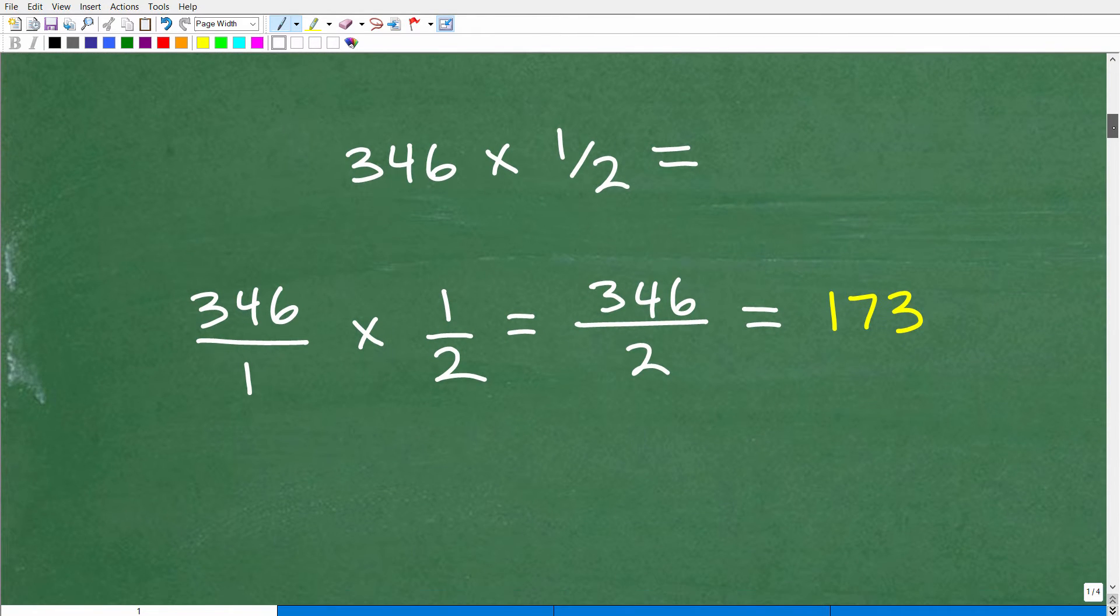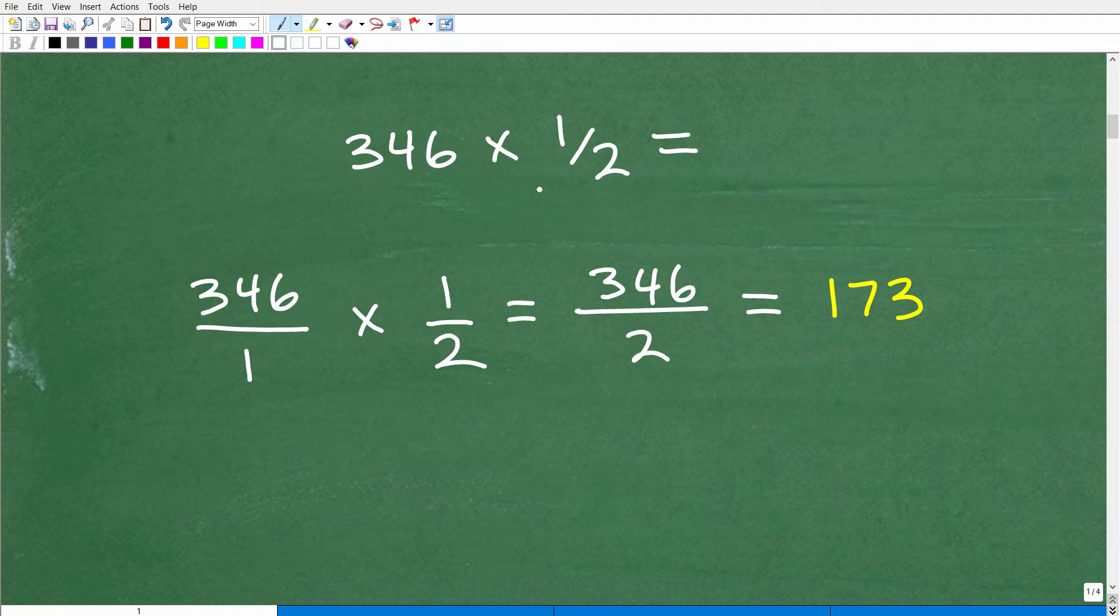All right. So the first approach you can take to get this answer is to see that this is a multiplication problem. And it involves a fraction. So you're like, okay, I'm thinking fractions. Maybe I want to think of this whole problem as a fraction. That's a good approach. So we're looking at this 346. You're like, well, I don't have a fraction and I'm multiplying by a fraction. Just remember, you can make any number into a fraction just putting it over one. Okay. So 346 over one times the fraction one half. This is a perfectly fine way to do this problem.